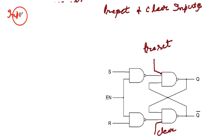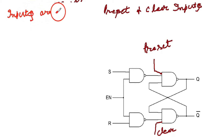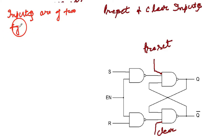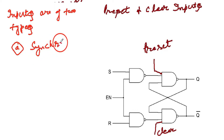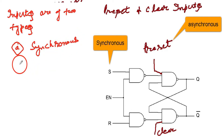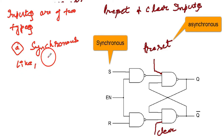There are two types of inputs. You may give inputs at S and R, or you may give some value to preset and some value to clear. The first type is synchronized input — giving inputs at S and R (or D and T for other flip-flops) are synchronous inputs.